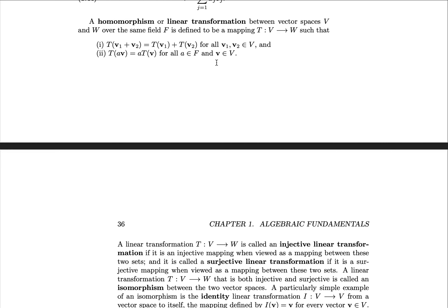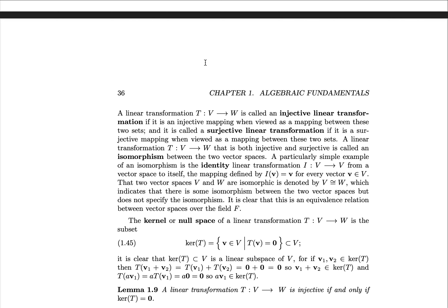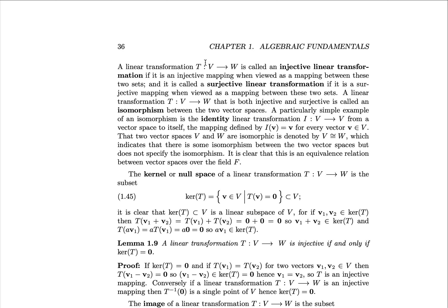Let's get a little exercise to try to see how you could write this as one identity. A linear transformation T from V to W is called an injective linear transformation if it is an injective mapping when viewed as a mapping between these two sets, that is, associating elements of V ignoring the vector space structure, and elements of W also ignoring the vector space structure.